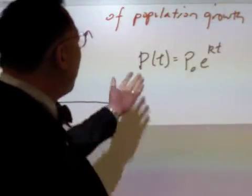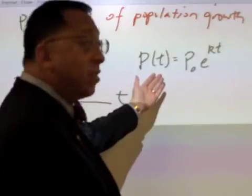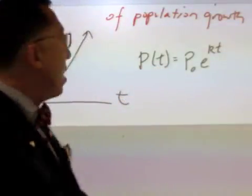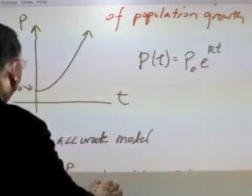The solution being that the population as a function of time, the population at time t is equal to p zero e to the kt. But the more accurate model is as follows.